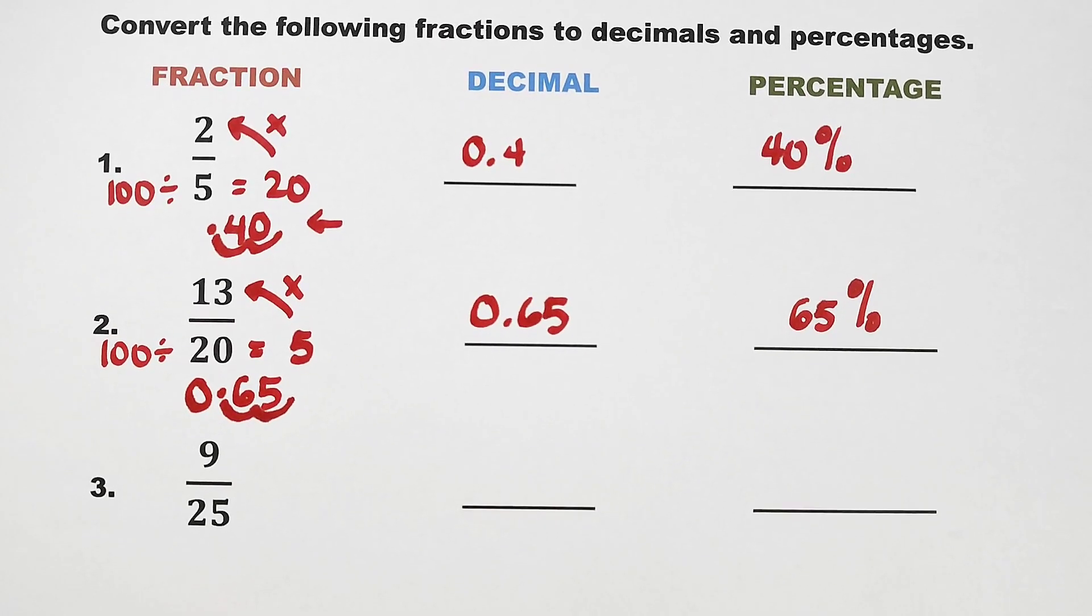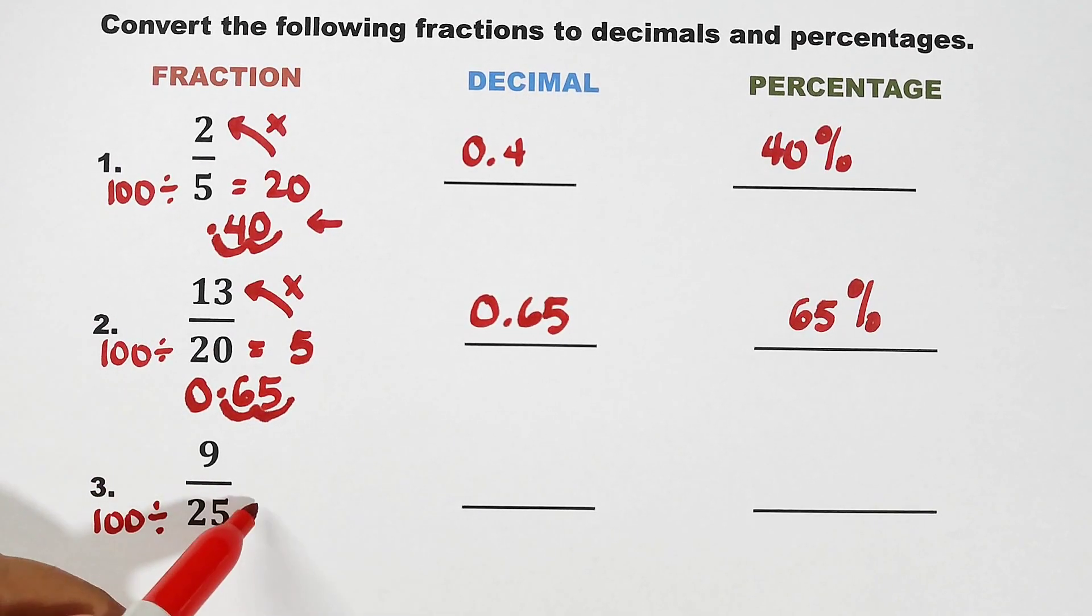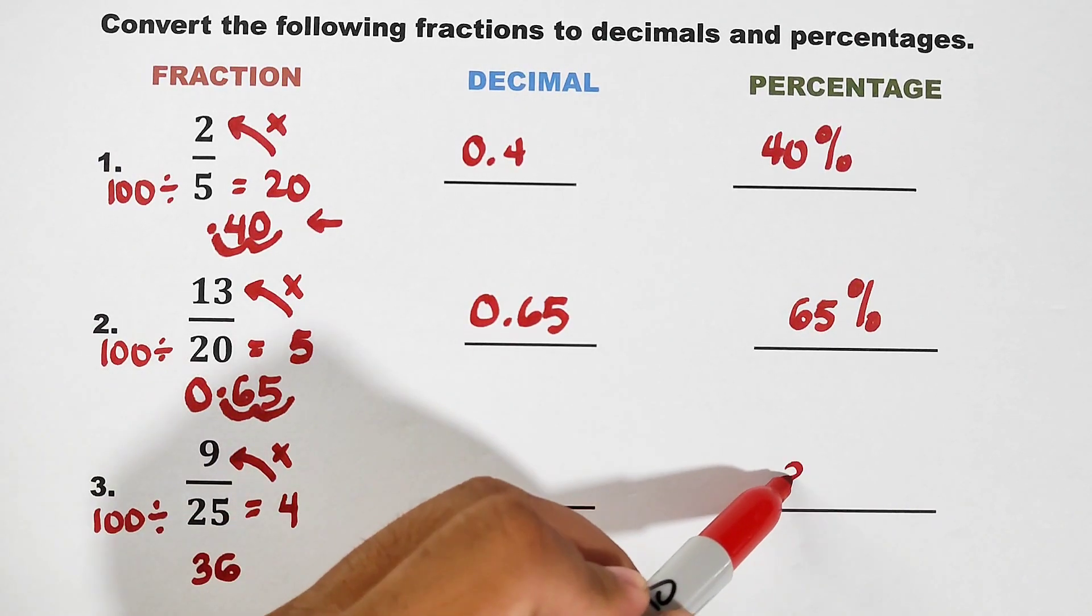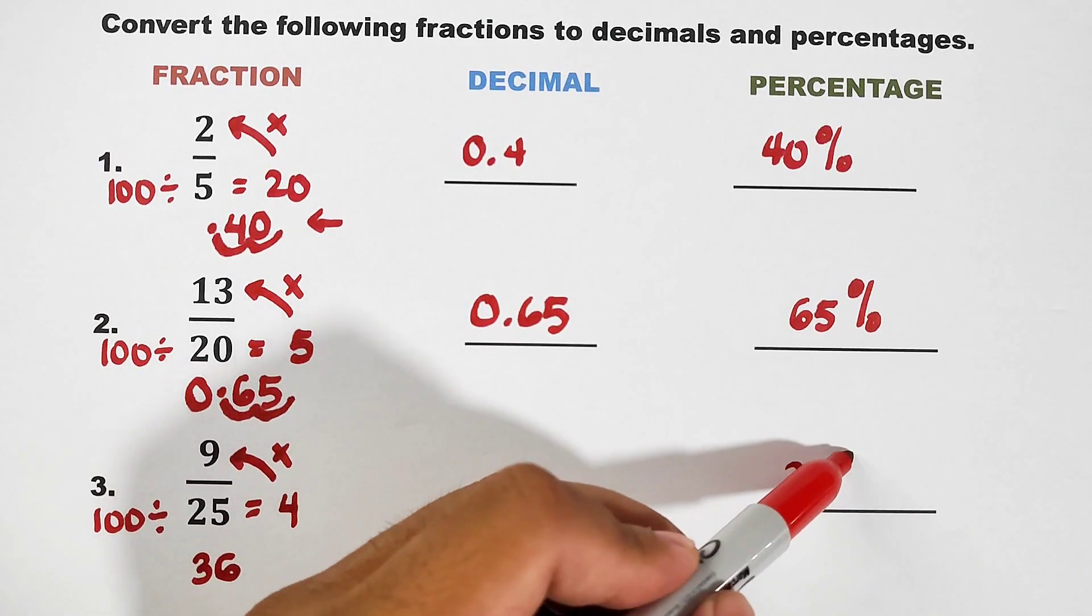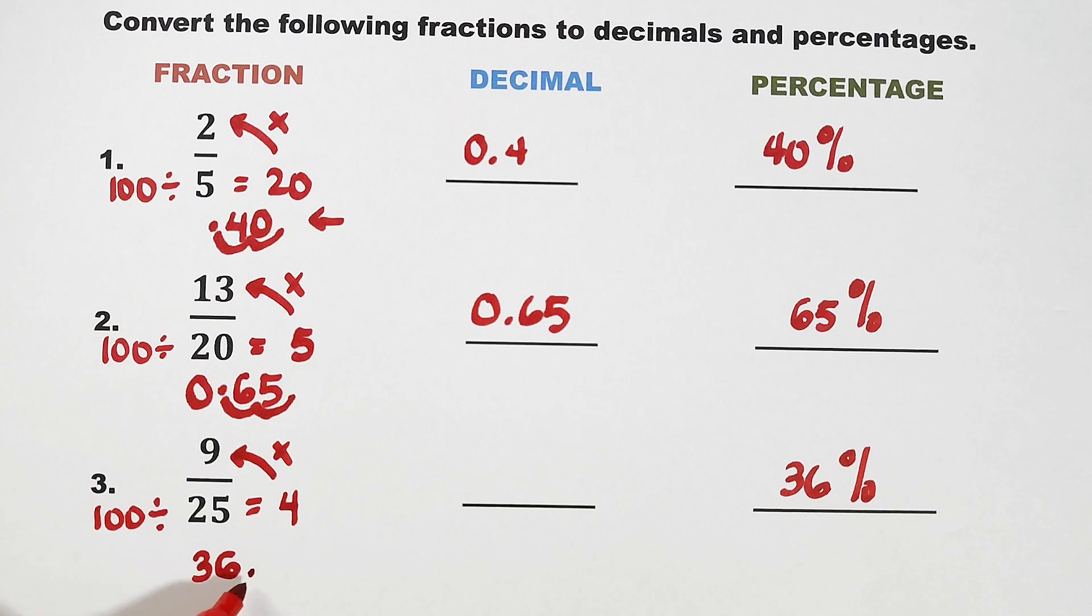Now let's move on with number 3. So I will adjust this paper first. 9 over 25. 100 divided by 25, the answer is 4. Multiply 4 by your numerator. 4 times 9, which is 36. Get this number 36 for the percentage and then attach the percentage symbol. Now for the decimal equivalent, 1 and 2. So as you can see, you have 0.36 as an answer.